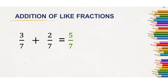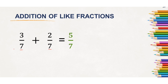Look at another example: 3 by 7 plus 2 by 7. Out of 7 parts, you have got 3 parts and your friend has got 2 parts — that means out of 7 parts. The denominator remains the same when it is like fractions.